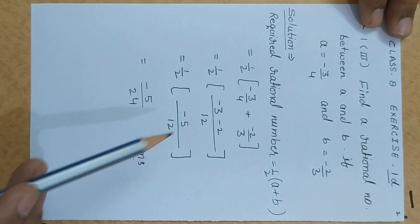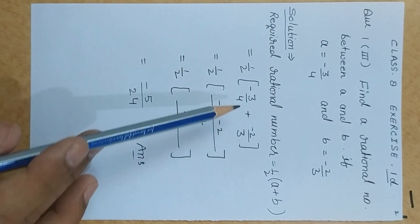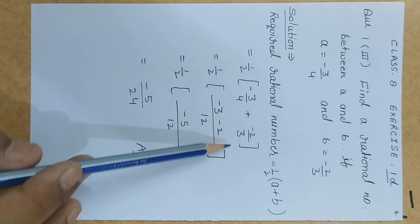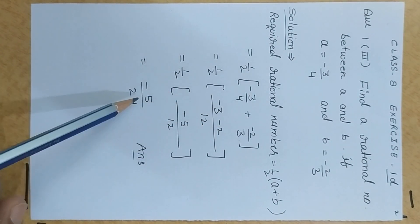So, here 1st term is minus 3 by 4 and 2nd term is minus 2 by 3. Simplify bracket term, taking LCM as 12. Minus 3 minus 2 gives minus 5 by 12, and answer is minus 5 by 24.